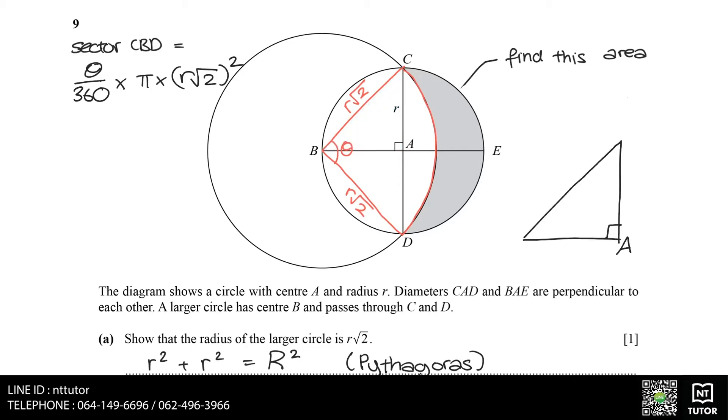In triangle ABC, the angle CBA would be equal to theta divided by 2. AC is the radius of the smaller circle, which is R, and BC is R square root 2 because it's the radius of the larger circle. We have an angle to find the value of and we have two side lengths of a right-angled triangle, so we can use trigonometry. We have the opposite side and the hypotenuse side, so we can use sine theta over 2 equals opposite, which is R, over hypotenuse, which is R square root 2, to find the value of theta.